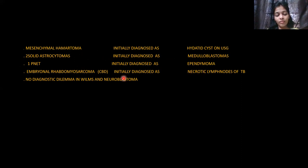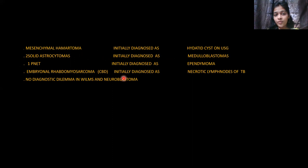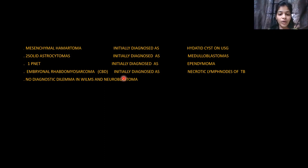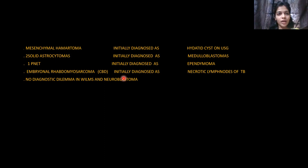In the embryonal rhabdomyosarcoma case, the child was an older male who presented with ascites. On ultrasound, solid components were noted at the hilum, thought to be necrotic lymph nodes. CT also suggested necrotic lymph nodes. Ascitic fluid analysis and the CBD evaluation were negative for TB. Biopsy of the hilar region confirmed embryonal rhabdomyosarcoma.